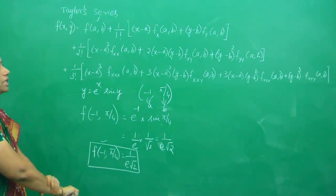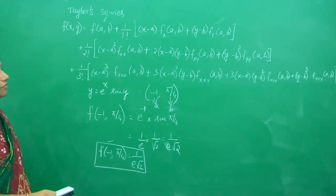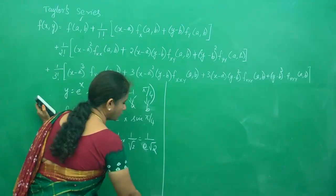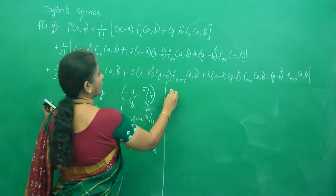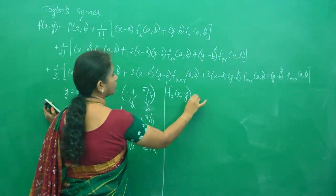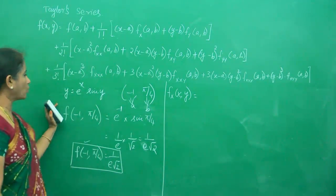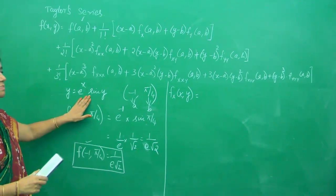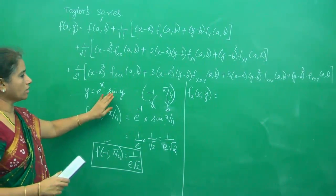Now we do the second part. For that, I need to calculate f_x(a,b). Before that, I need to do f_x(x,y). When I want to do the partial derivative with respect to x, y is a constant.